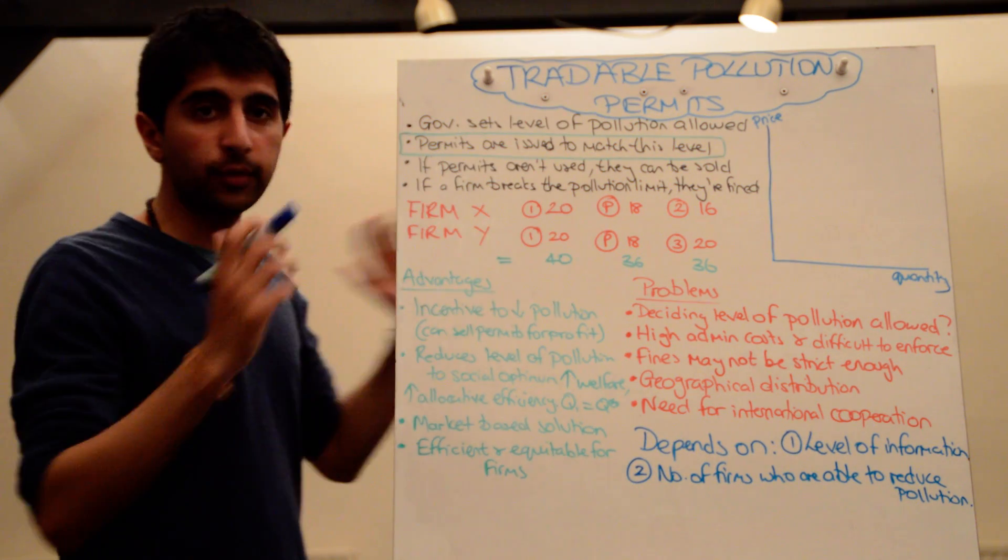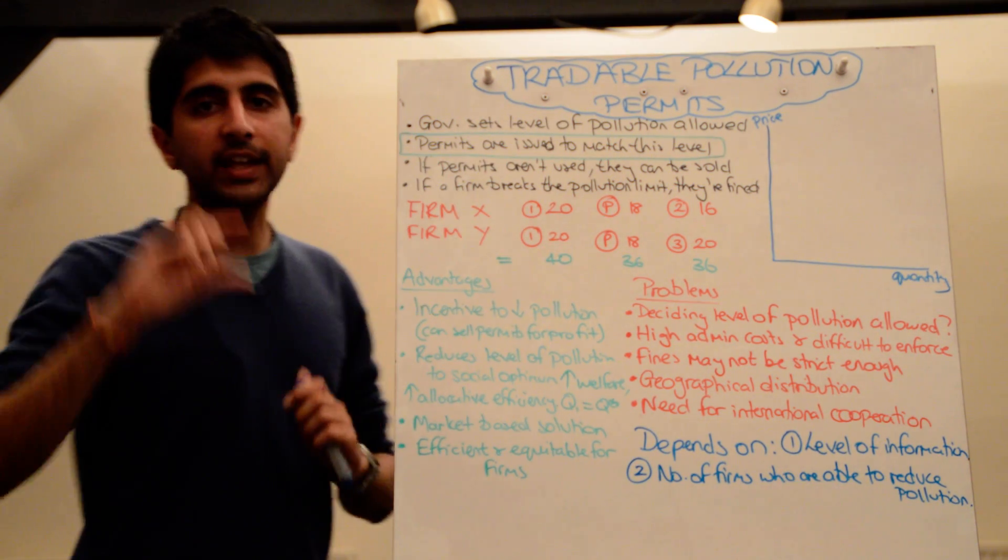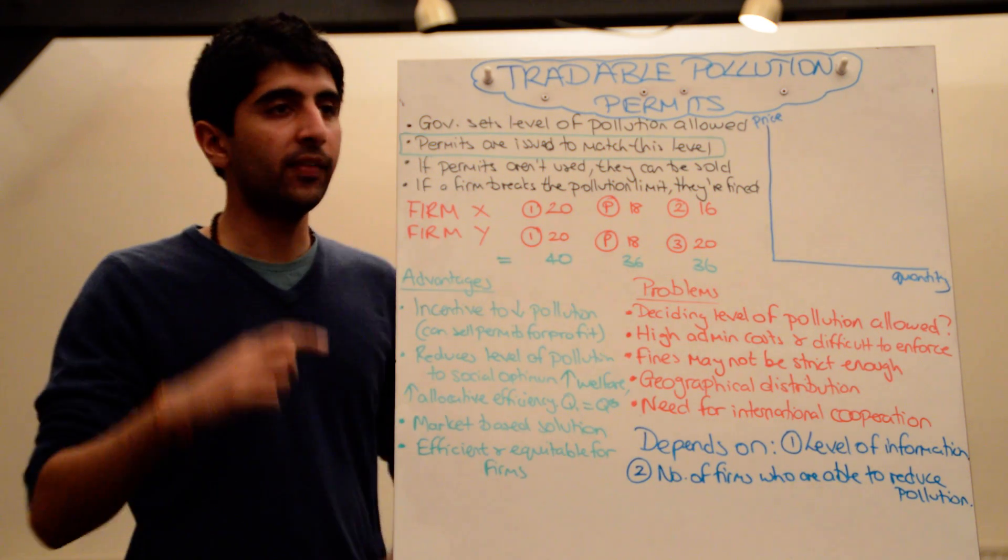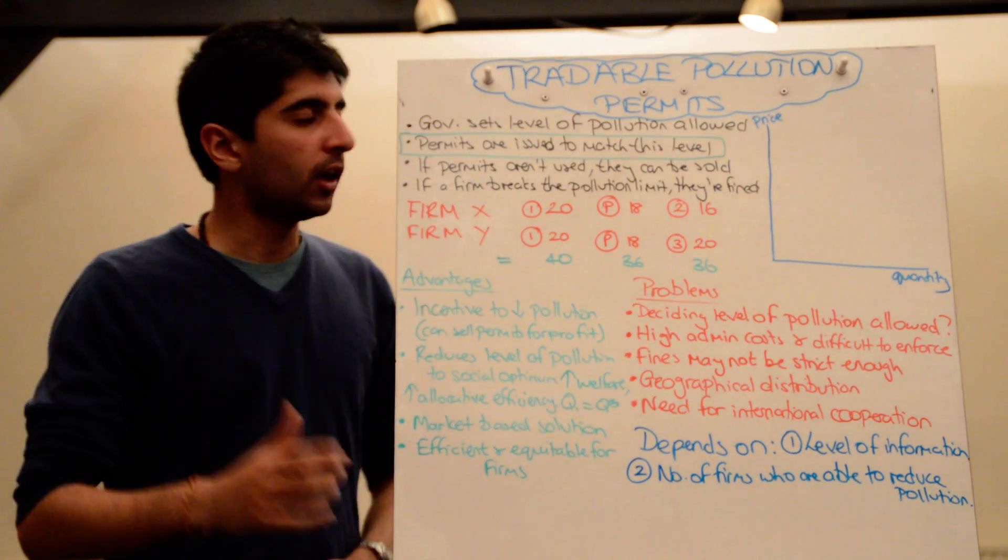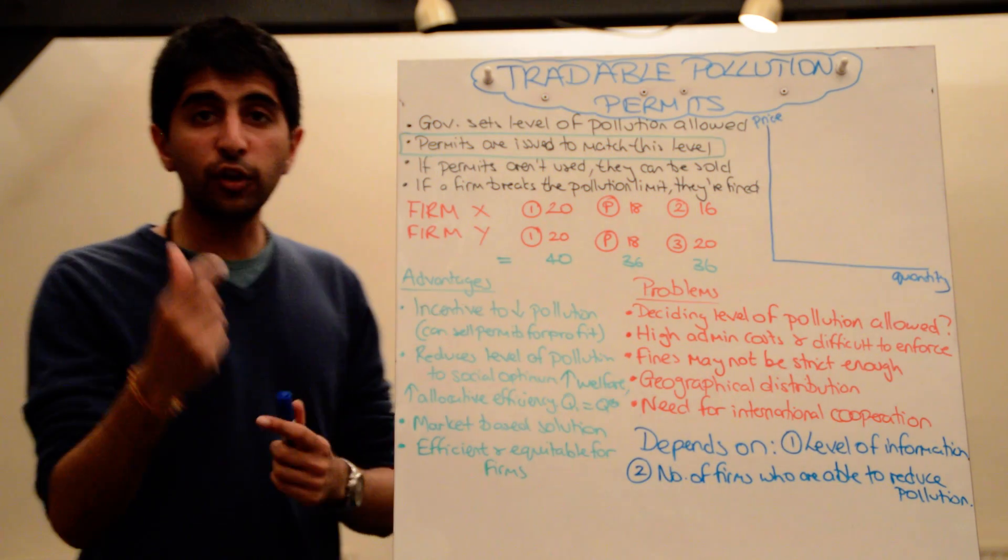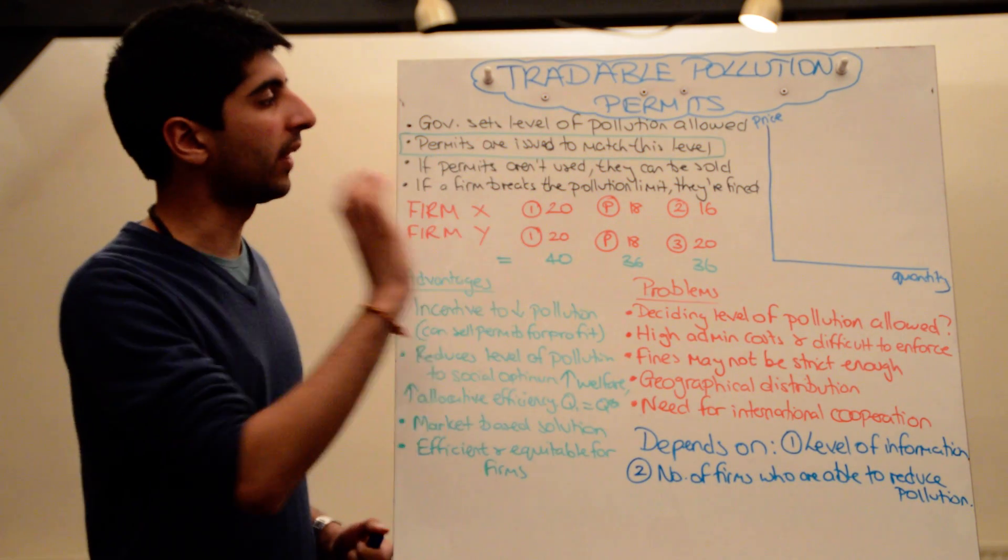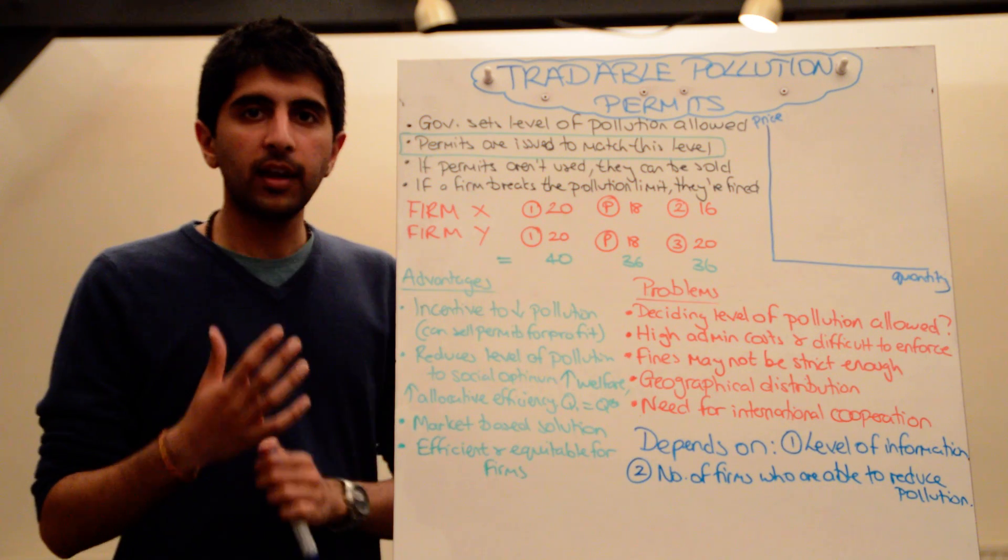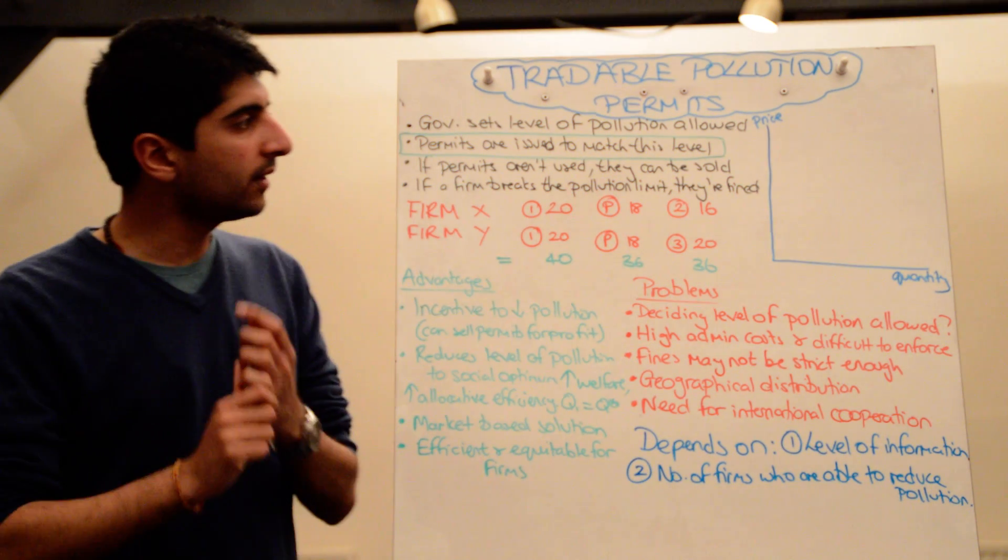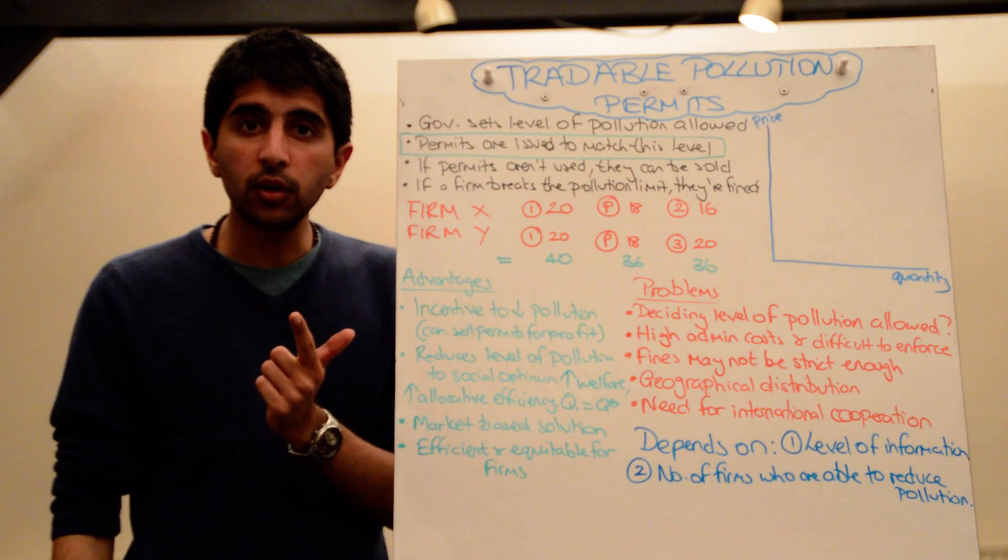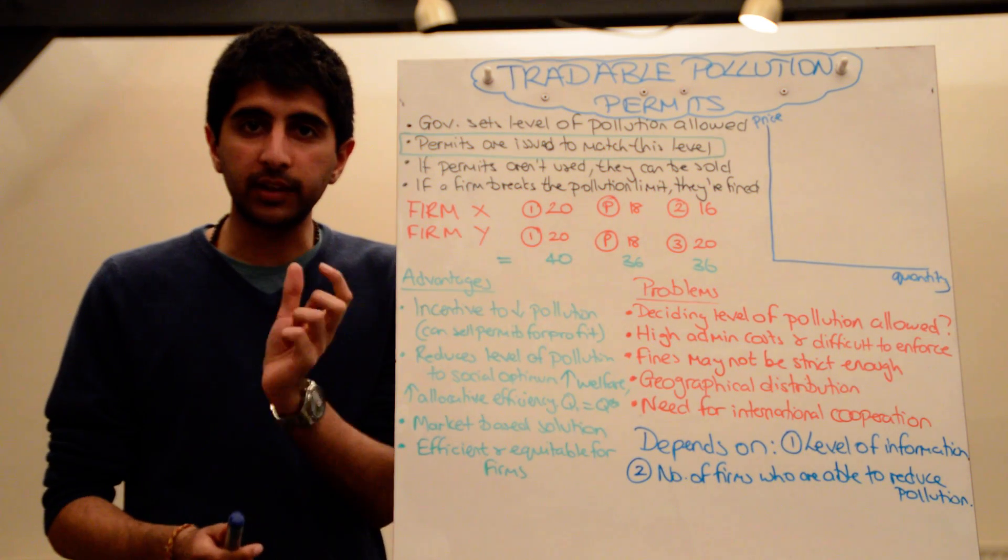How do pollution permits work? How does this scheme work? First of all, the government decides on a level of pollution that's allowed in the entire economy, that's allowed for specific firms when broken down. Permits are then issued to firms to match this level of pollution that they have decided. Firms are then given all these permits and they can then make a decision. They decide whether they're going to reduce pollution down to the level that they're allowed to.